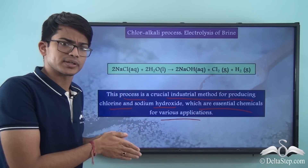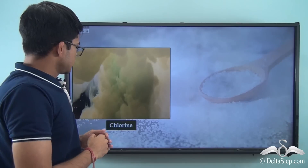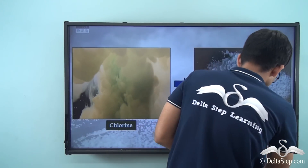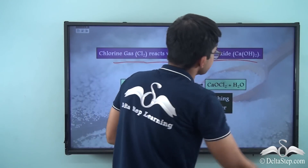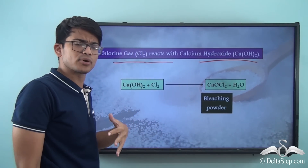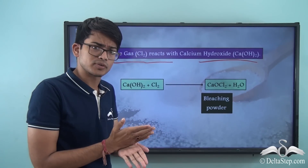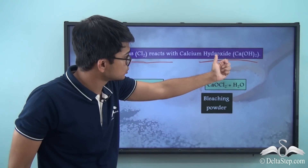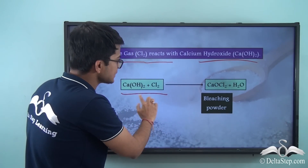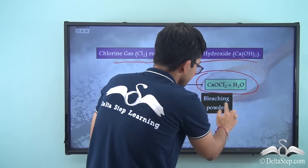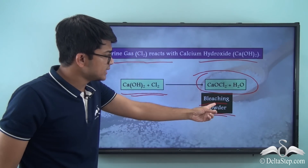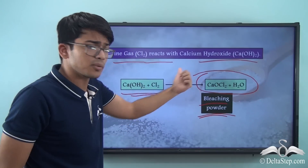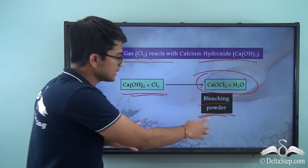Now, taking the chlorine produced and adding it with dry slaked lime: chlorine gas reacts with calcium hydroxide, Ca(OH)₂. The equation is: Ca(OH)₂ + Cl₂ → CaOCl₂ + H₂O. The product CaOCl₂ is bleaching powder. Bleaching powder is manufactured from calcium hydroxide and chlorine gas when they come together.